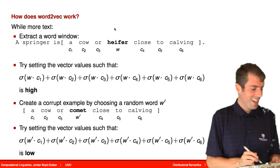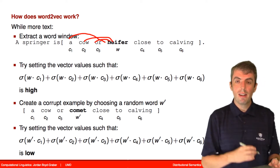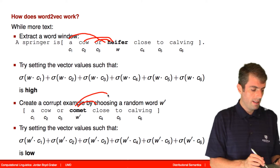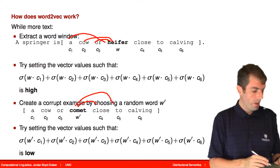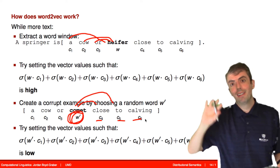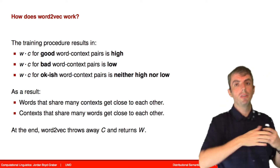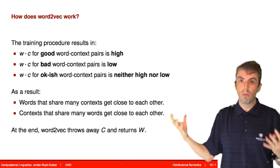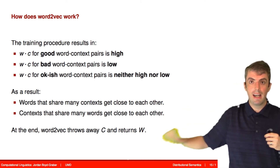Think of this like logistic regression: you have positive examples where you want the probability to be high, and negative examples where you want the probability to be low. Your feature vectors are your context words. If you do this again and again, going through all your examples and selecting negative contexts for each, you'll end up with word representations such that the dot product for good word-context combinations is high and for bad ones it's low.